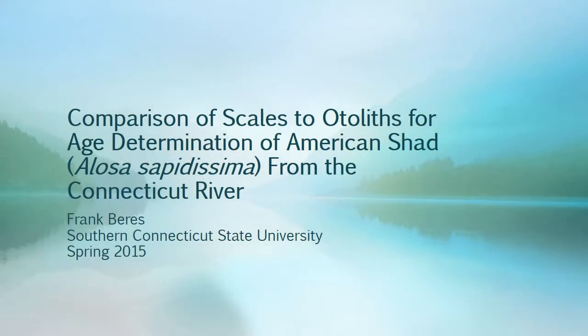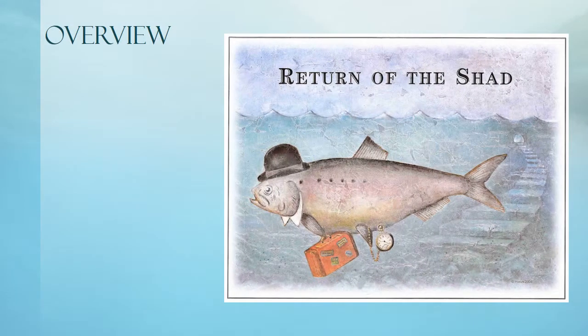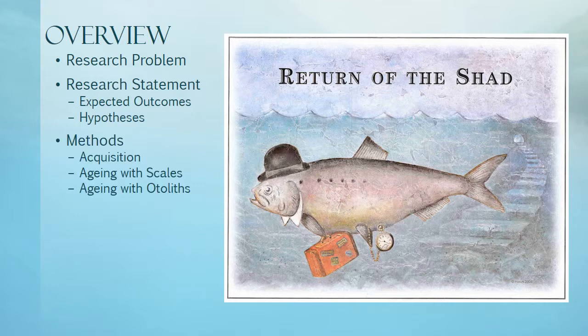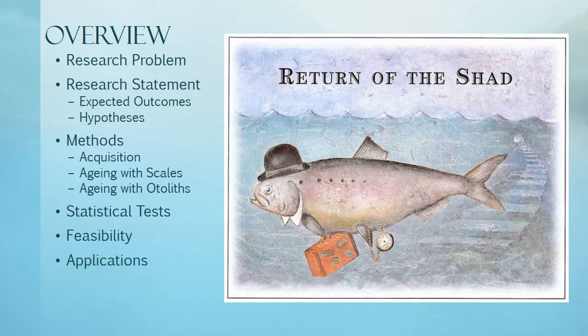Comparison of Scales to Otoliths for Age Determination of American Shad from the Connecticut River. A presentation by Frank Barris, Southern Connecticut State University. In this presentation, I will be examining a research problem concerning American Shad in the Connecticut River. I will present working and alternate hypotheses with expected outcomes, give a brief overview of acquisition and aging methods, and statistical tests used to assess findings, a realistic assessment of obstacles to completion, and examine current and future applications of the data.